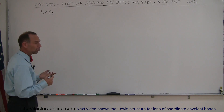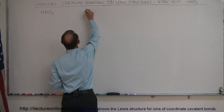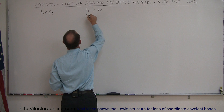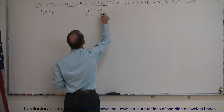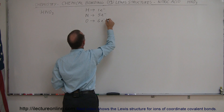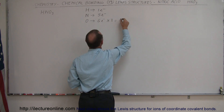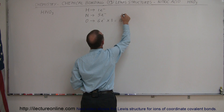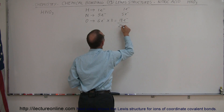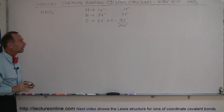Let's write down the number of valence electrons for each of these atoms. For hydrogen, that is one valence electron. For nitrogen, there we have five valence electrons. And for oxygen, we have six valence electrons. There are three oxygen atoms here, for a total of 18 valence electrons, plus five plus one — a total of 24 valence electrons that are going to be used in all the bonding here.